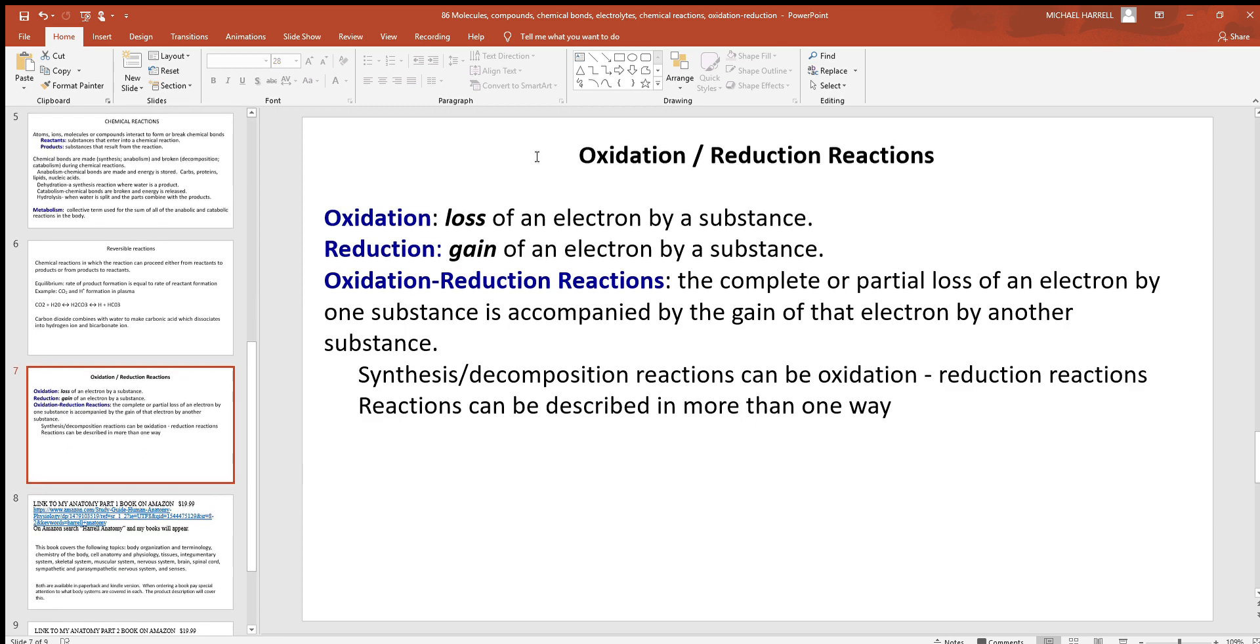We also see here oxidation reduction reactions. Oxidation is the loss of an electron by a substance and reduction is the gaining. Now often that doesn't make sense. You say, wait a minute, reduction is the gaining of an electron. You got to remember, electrons have a negative charge. So if something gains an electron, it gained a negative. That's why that's called reduction. Oxidation is the opposite, the loss of an electron right there. And you'll see some oxidation reduction chemical reactions throughout your chapters.